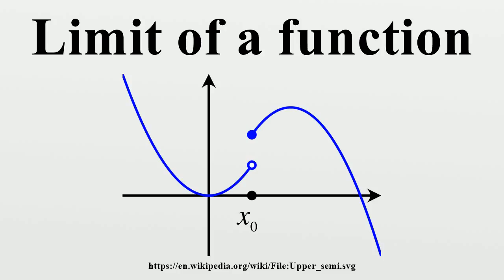For limits involving infinity: for F a real function, the limit of F as X approaches infinity is L, denoted accordingly, means that for all ε > 0 there exists C such that |F − L| < ε whenever X > C. Similarly, the limit of F as X approaches negative infinity is L means that for all ε > 0 there exists C such that |F − L| < ε whenever X < C.